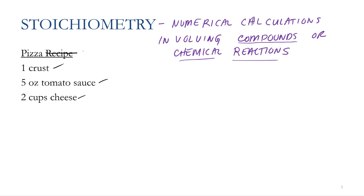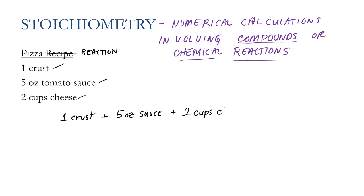Instead of a pizza recipe, let's think of this as a pizza reaction. If you have one crust and five ounces of sauce plus two cups of cheese, you can combine them to produce one pizza. When I write it like this, it looks almost like a balanced chemical equation. We've got our reactants — the crust, the sauce, and the cheese — and we've got our pizza. The ratios of how much we need of each would be my coefficients to my balanced chemical equation.